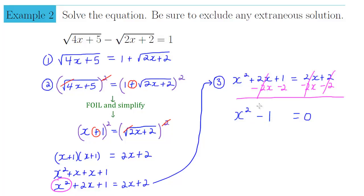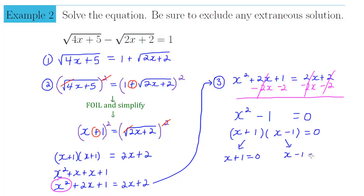x² − 1 = 0 is actually very easy to factor — it's a difference of squares. So we factor it as (x+1)(x−1) = 0. Setting each factor to zero: x + 1 = 0 or x − 1 = 0. Subtracting 1 from the first gives x = −1; adding 1 to the second gives x = 1. These are our proposed solutions.